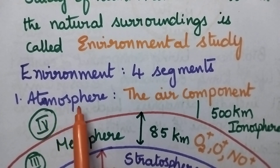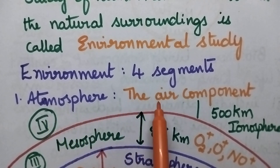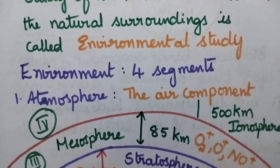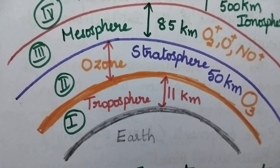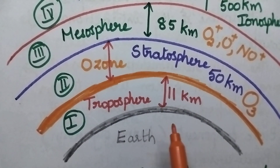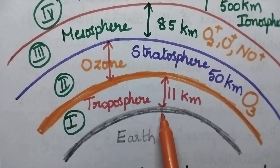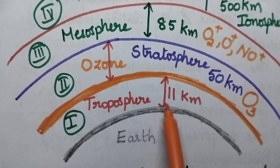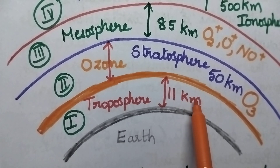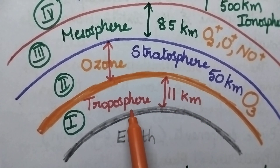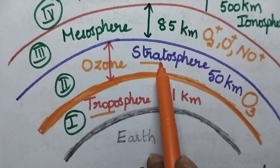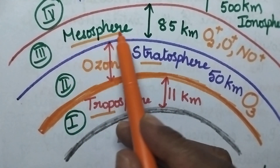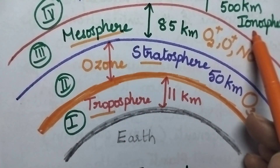The first segment is atmosphere — it is the air component. Atmosphere is divided into four layers: troposphere, stratosphere, mesosphere, and ionosphere.